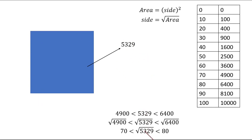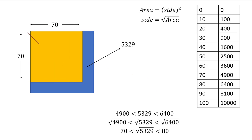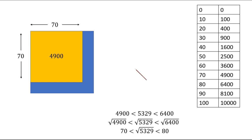If the area is 5329, the length of the sides would be exactly the square root of 5329, and we know it lies between 70 and 80. So what we do is draw a square whose sides are exactly 70 — it will fit inside the big square — and we know its area would be 4900. The area of the entire blue square is 5329 and the area of this yellow square is 4900.